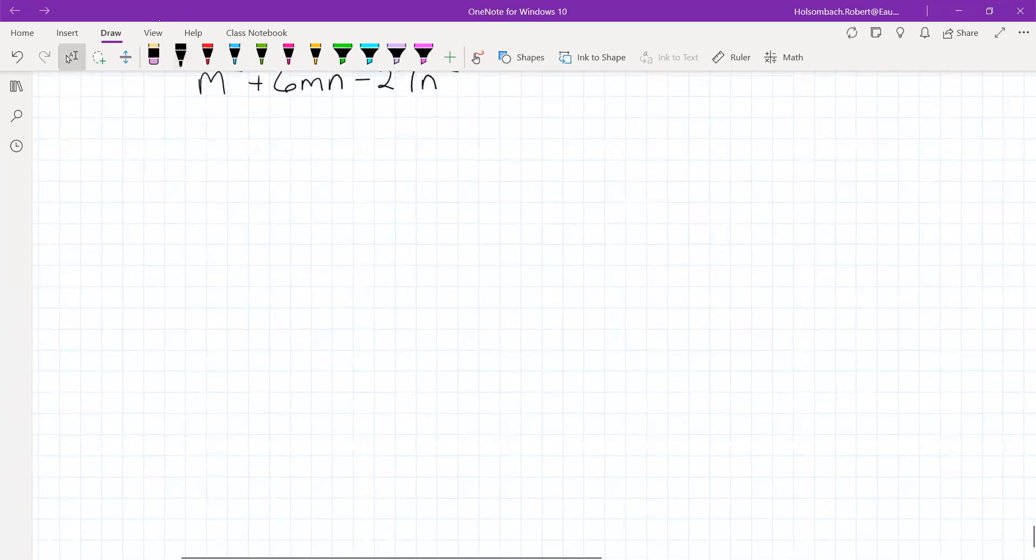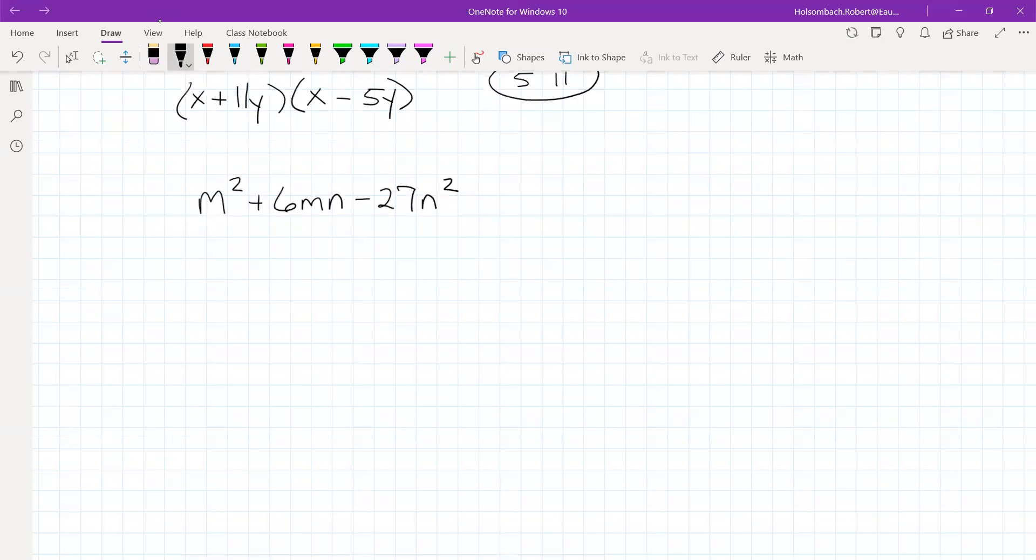So we're looking for factors of 27 that sum 6. So we've got 1 and 27 and 3 and 9. Those are the only factors of 27. The 1 and 27 won't work, but the 3 and 9 will.